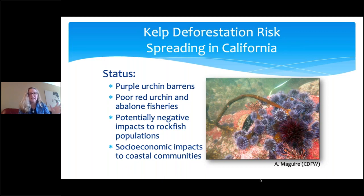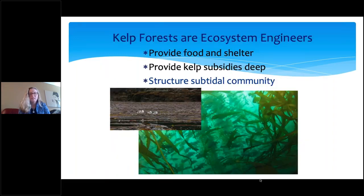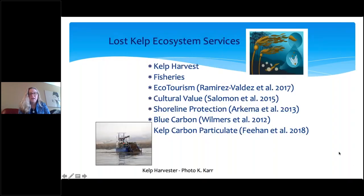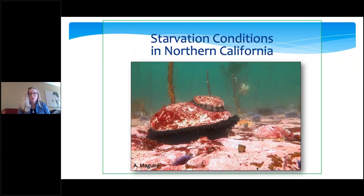Underwater, we also see the loss of subtidal short kelps and other algal species, now switching into ecosystems dominated by sea urchins. We are at risk of kelp forest deforestation on a massive scale — just imagine if in one year we lost more than 90% of forests on land. Not only are we losing the ecosystem that provides food and shelter, but we're also seeing a loss of kelp subsidies in deep water and a loss of the ecosystem services this kelp forest provides, including fisheries, cultural value, carbon sequestration, and carbon particulate important for larvae in the nearshore ecosystem.